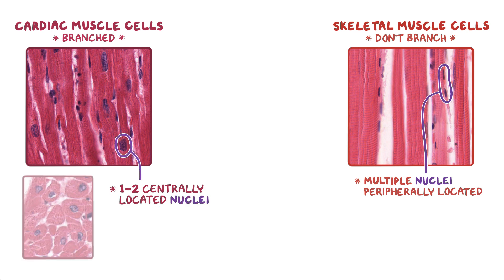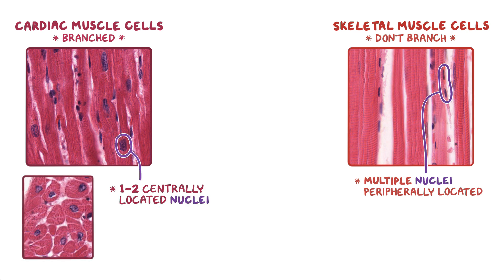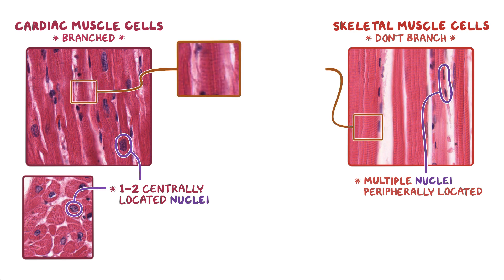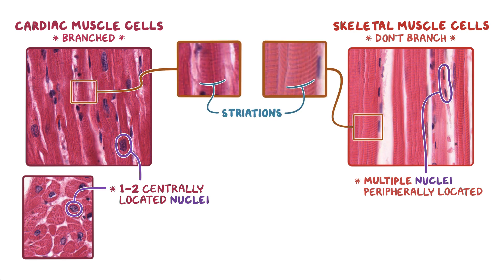If we look at a cross section of the cardiac muscle, it's easier to see that the nuclei are centrally located. Both cardiac and skeletal muscles have cross striations that are perpendicular to the muscle fibers, but they're much more prominent in skeletal muscles.